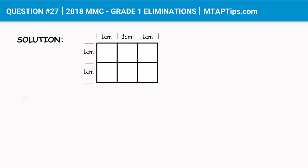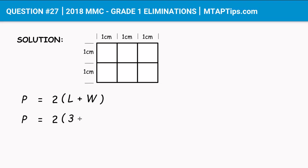To get the perimeter of a rectangle, we use the formula: P equals two times L plus W, where L is the length and W is the width. Applying the given numbers, P is equal to two times three, which is the length, plus two, which is the width.